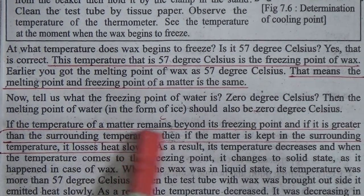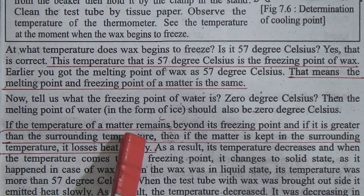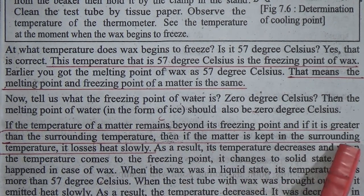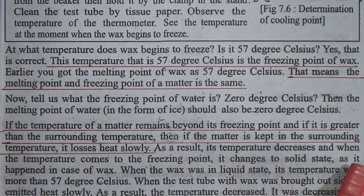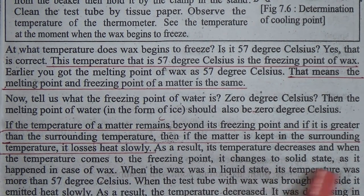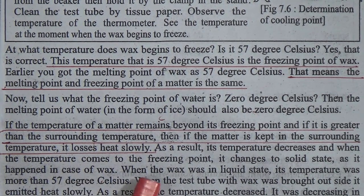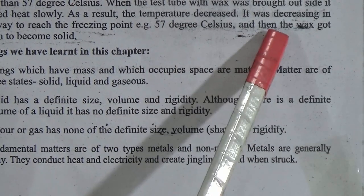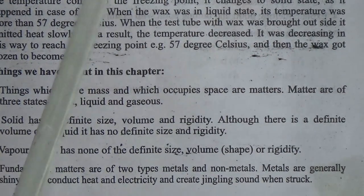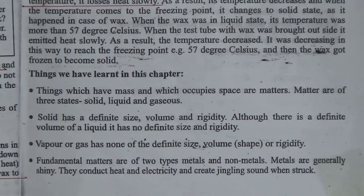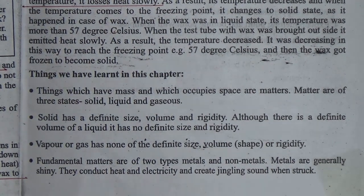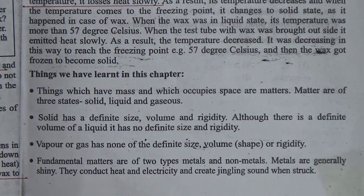If the temperature of a matter is above its freezing point and greater than the surrounding temperature, when kept in the surroundings it loses heat slowly. When its temperature decreases to the freezing point, it changes to solid state — as happens with wax. When the wax was liquid, its temperature was above 57°C; as it cooled to 57°C, it became solid again.